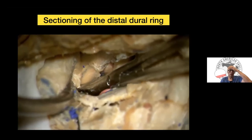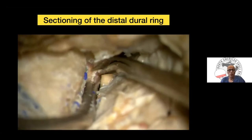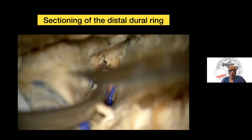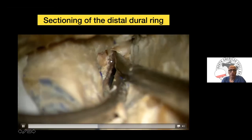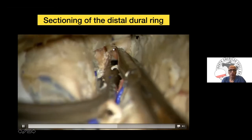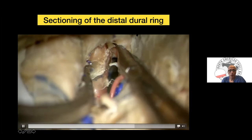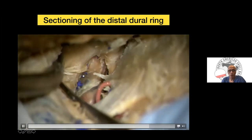In another cadaveric dissection, after clinoidectomy is performed, cutting the distal dural ring reveals the ophthalmic artery, the clinoidal segment of the carotid, and the cavernous sinus.